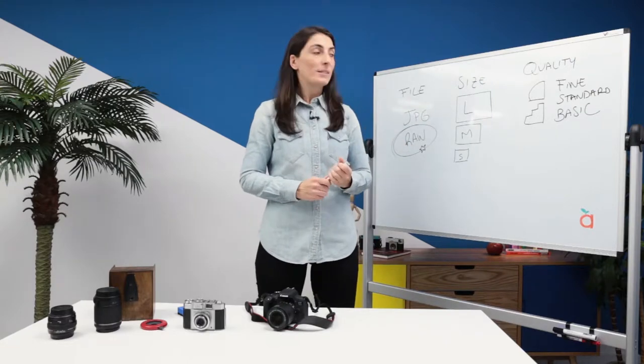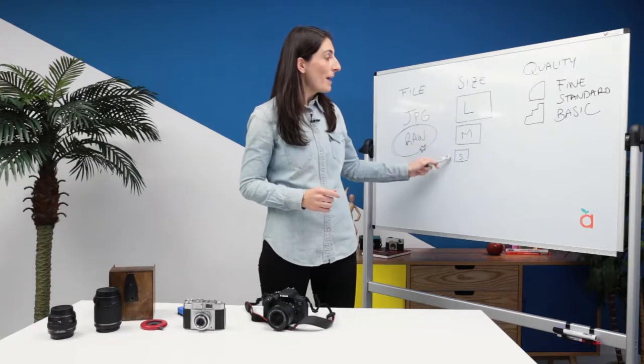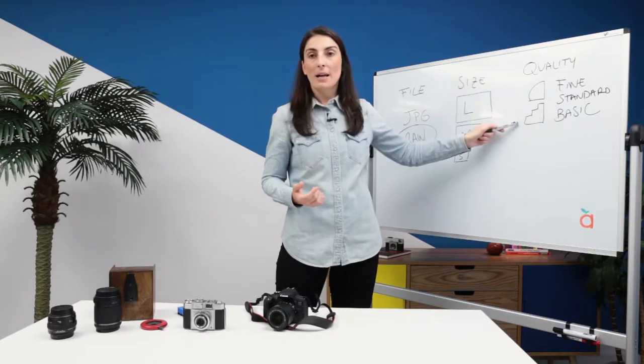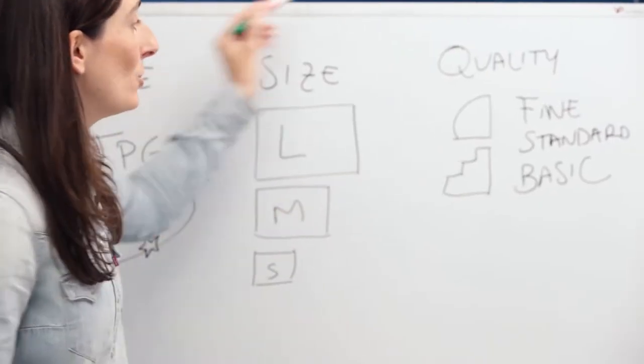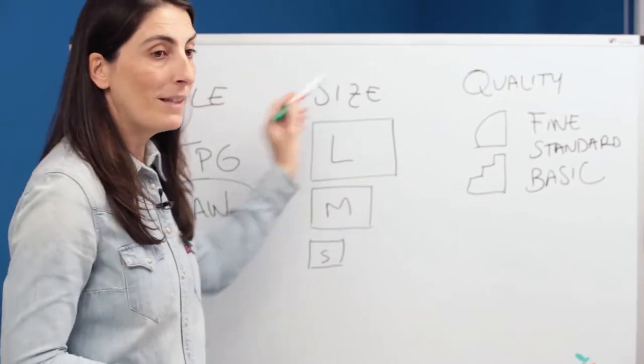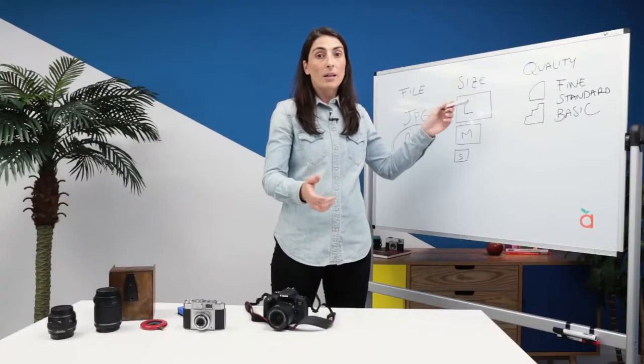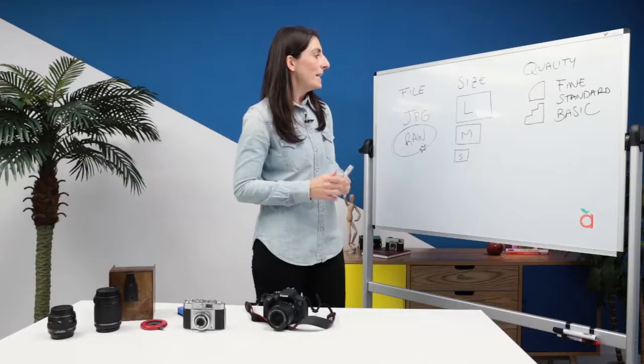What else do we need to know? There are two important elements, image size and image quality. Depending on the camera we are using, they are going to appear in the same screen or in different screens. So, just have a look to check where they are in your camera.